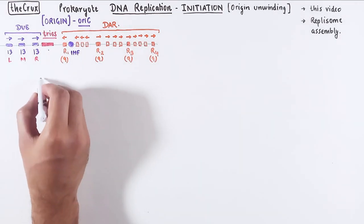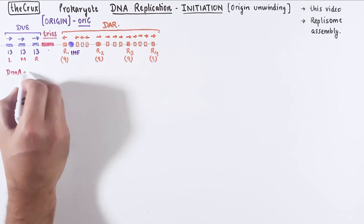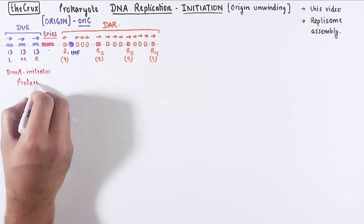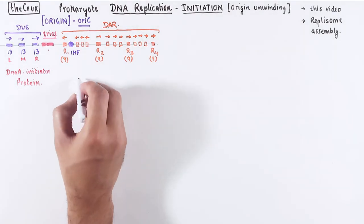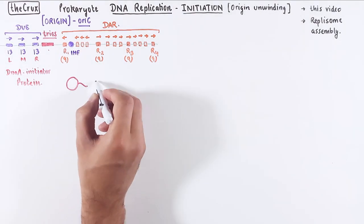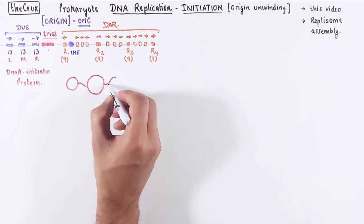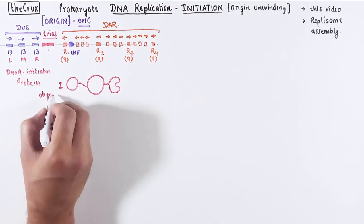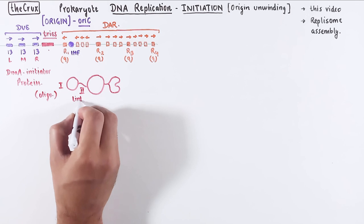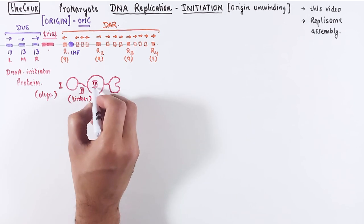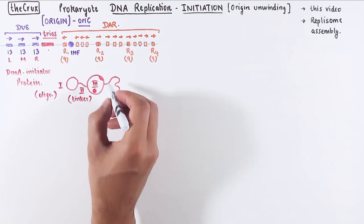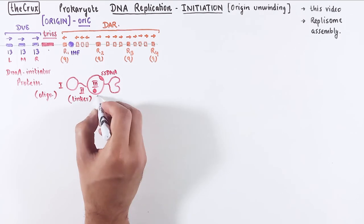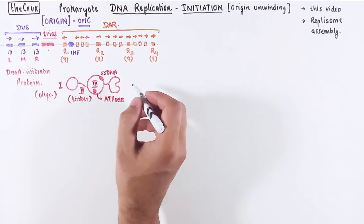The second main thing that we need to recap is the DnaA initiator protein. We also discussed this in much more detail in the origin structure video. Just briefly, the DnaA protein has four important domains. Domain 1 forms the oligomers, domain 2 is a flexible linker, domain 3 can bind single-stranded DNA and has also an ATPase, and finally domain 4 binds the double-stranded DNA.